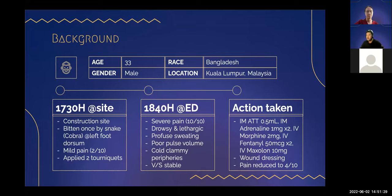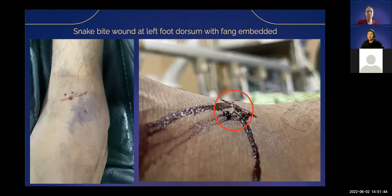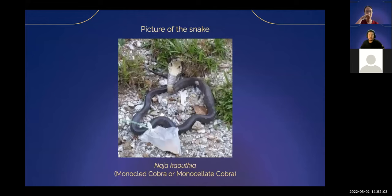He was given IM anti-tetanus, adrenaline, morphine, fentanyl, and metoclopramide, and wound dressing was done. Pain reduced to 4 out of 10. His friends showed the doctors a picture of the snake, but they couldn't identify the species. The snake bite wound was on the left dorsum with a fang embedded — visible as a laceration on one picture and an embedded fang visible in the circle on another. The snake was identified by specialist Prof. Khaldun as Naja kaothia, or Monocled Cobra — locally known as Ular Tedung Sendok.